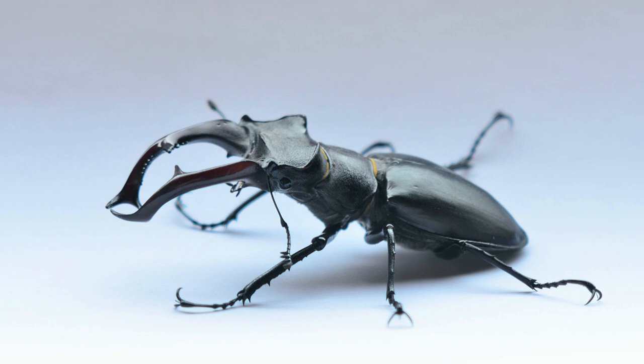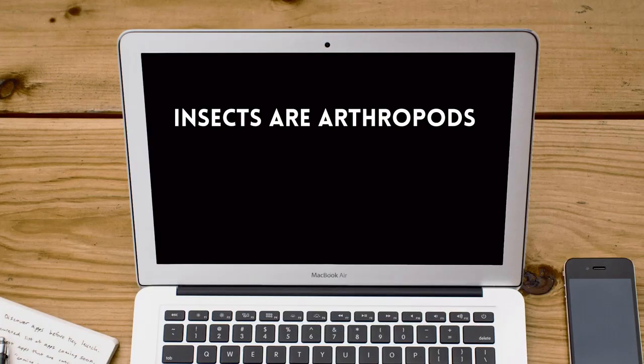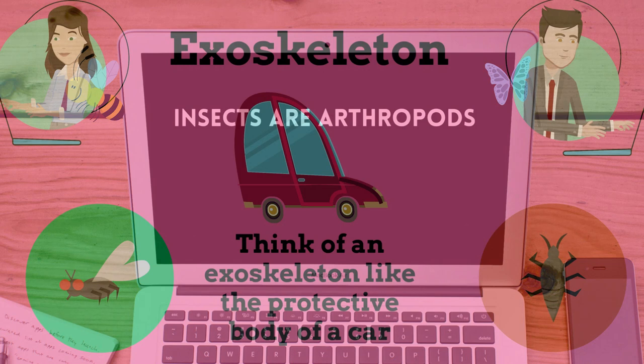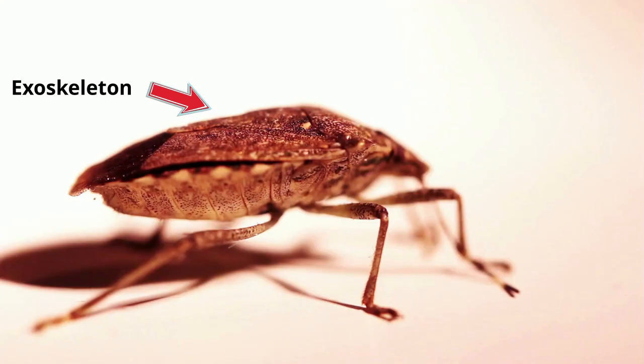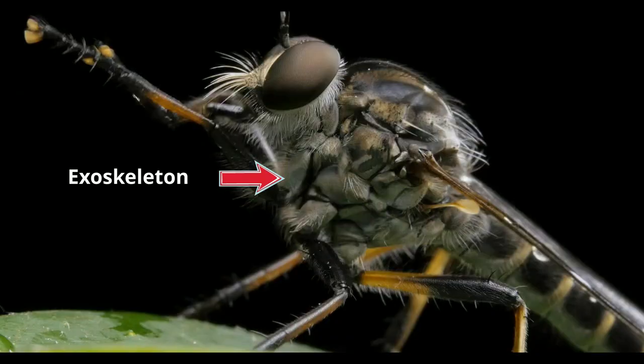What are some traits of insects? First, insects are arthropods. All arthropods have several traits in common. The first trait is an exoskeleton. Remember the question from the beginning? The answer to how many bones this insect has is none. Arthropods do not protect their organs with a skeleton made of bones. Instead, they have a hard outer covering called an exoskeleton.